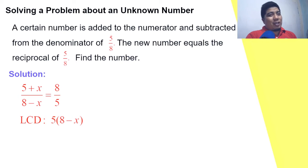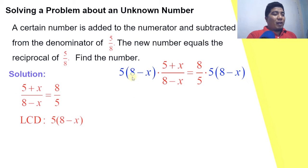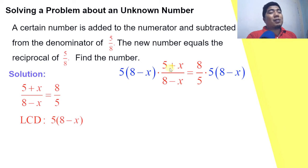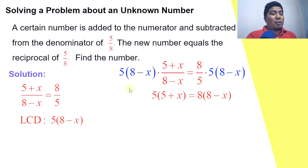We have five times eight minus x on the left side and on the right side. Remember the LCD shares part of our denominators. On the left side, eight minus x cancels, giving us five times five plus x. On the right side, five and five cancel, leaving eight times eight minus x.